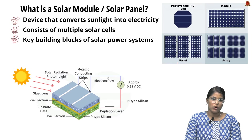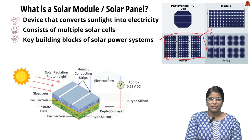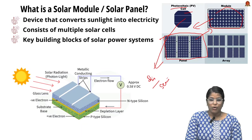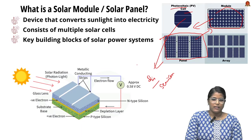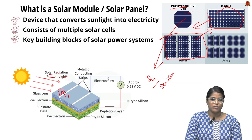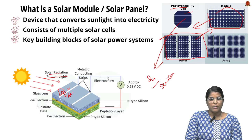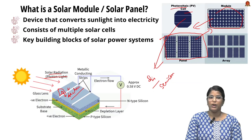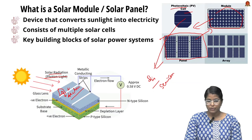To answer this question, we should first know what a solar module or solar panel is. A solar panel in reduced form is a module, and further reduced is a photovoltaic cell. This photovoltaic cell is made up of silicon, which is a semiconductor. Silicon receives photons from solar radiation and releases electrons by absorbing these photons — the flow of electrons is electricity. This is how a solar panel works.